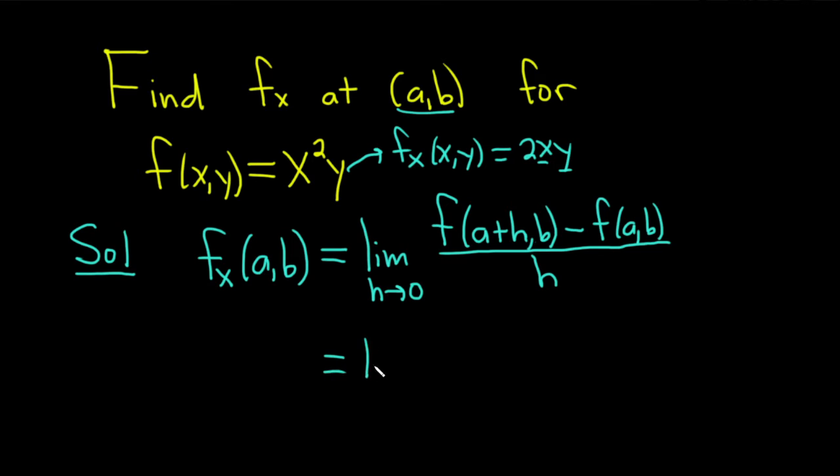Okay, so this is equal to the limit as h approaches 0. And so now we're just going to figure out what this is. Basically this means we're going to replace x with a+h. And then we have our b here, that's our y, minus f(a,b), which will be a squared. And then we have our b. All of this is being divided by h.